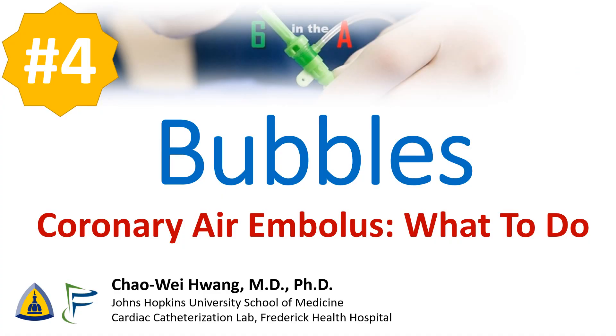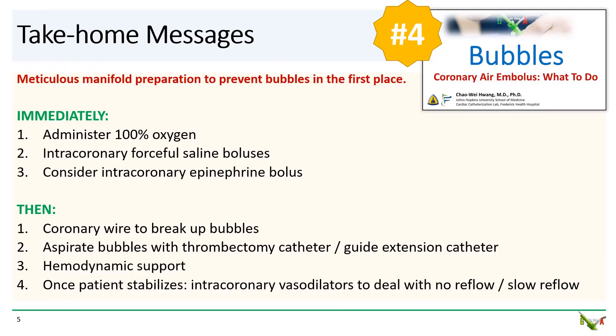Number four: bubbles — coronary air embolism, what to do? Take-home messages. First, prevent bubbles. Be very meticulous about preparing your manifold so that no bubbles get injected in the first place. If you do end up with a large coronary air embolism, here is the approach we typically take: immediately administer 100% oxygen and forcefully inject saline into the coronary artery to flush through the bubbles. Consider using intracoronary epinephrine. Then get a coronary wire in there to break up the bubbles and use a thrombectomy catheter or guide extension catheter to suck the bubbles out.